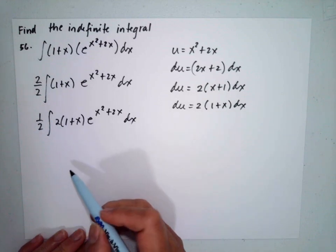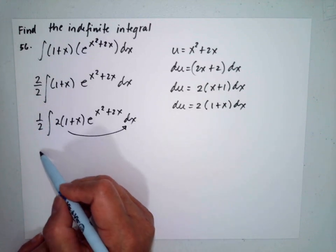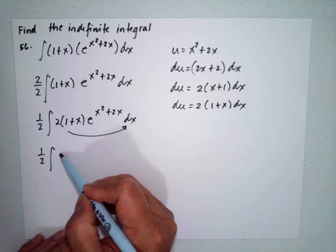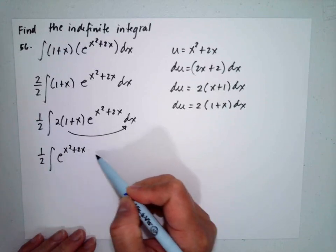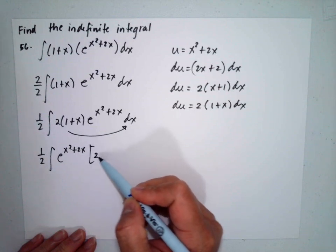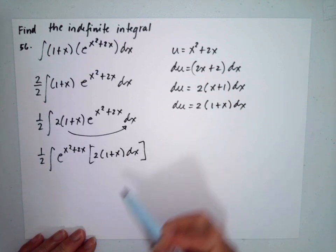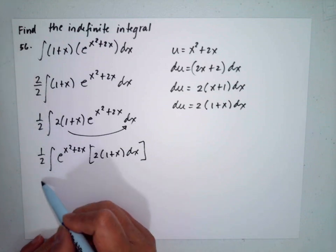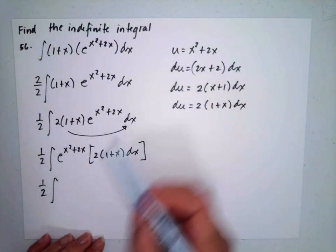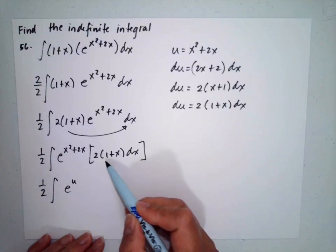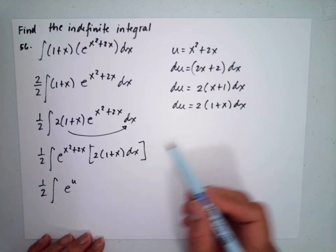We move the 2 beside the dx. So we have one half the integral of e to the x squared plus 2x, multiplied by 2(1 plus x) dx. Substituting, e to the x squared plus 2x becomes e to the u, and 2(1 plus x) dx is our du.